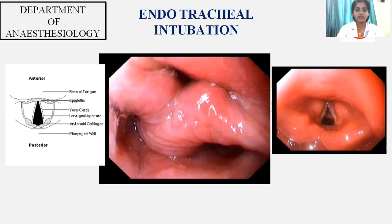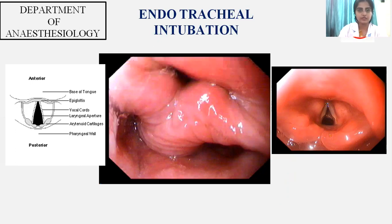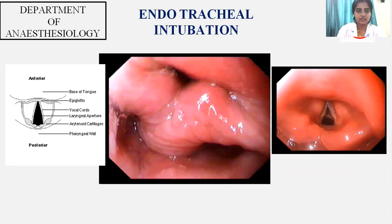During direct laryngoscopy you will see the following structures: the base of the tongue, the epiglottis, the white shining vocal cords beyond which you have the laryngeal inlet, and posteriorly the arytenoid cartilages.